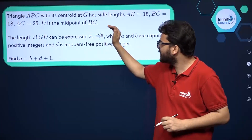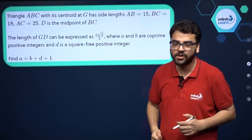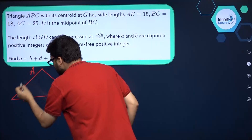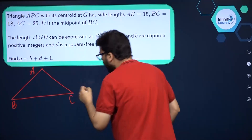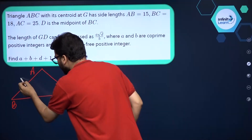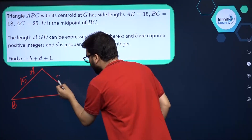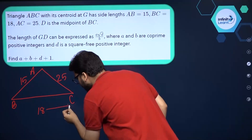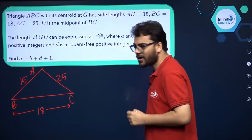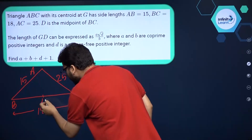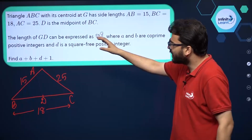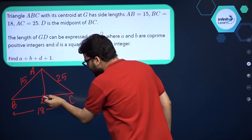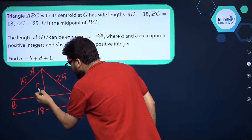It is given that D is the midpoint of BC. We have triangle ABC with AB equal to 15, AC equal to 25, and BC equal to 18. D is the midpoint of BC, so D is placed on BC. We want to find the length of GD. I have to join the median AD — this is a median because D is the midpoint of BC, and G is the centroid.